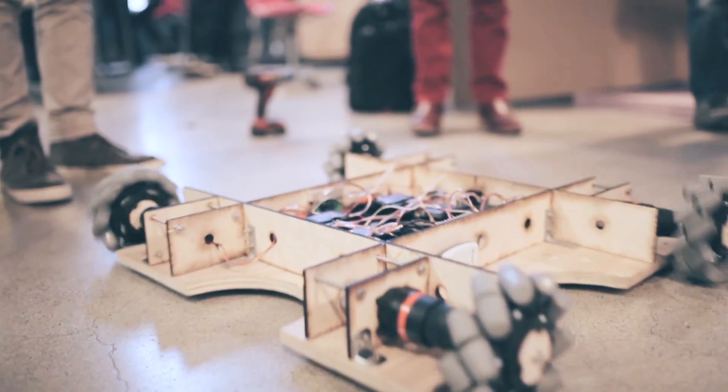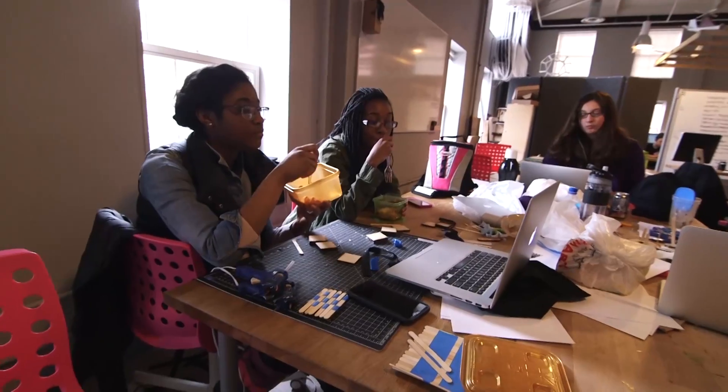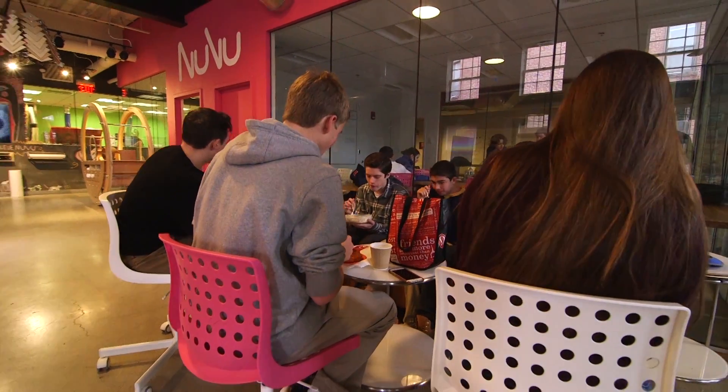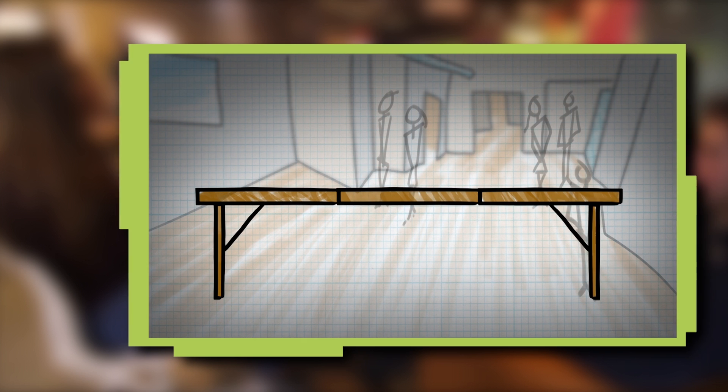Every two weeks we take on a different design challenge. This session we're working to redesign the lunch table. A lot of places like ours don't have enough room to both work and eat in the same space, and that's why we're trying to make a lunch table that can spread out during lunch time but can be stored away when it's time to work.